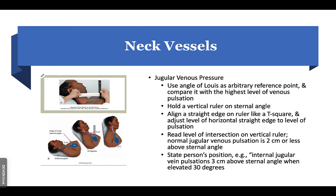To assess jugular venous pressure, use the manubrial sternal angle as a reference point and compare it to the highest level of venous pulsation. Hold a vertical ruler on the sternal angle, align a straight edge like a T-square, and adjust the horizontal edge to the level of pulsation. Read the level at the intersection. Normal jugular venous pulsation is two centimeters or less above the sternal angle. Document the patient's position — for example, internal jugular vein pulsations three centimeters above the sternal angle when the head of bed was elevated at 30 degrees.